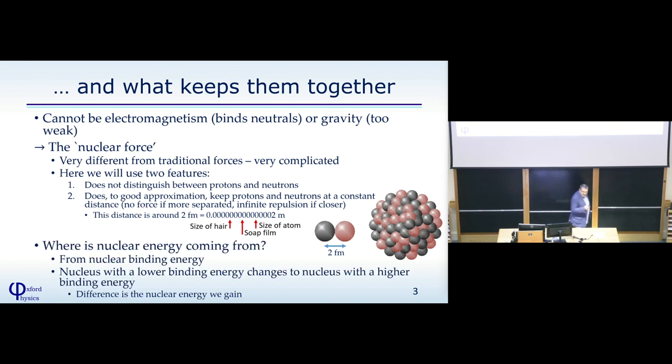The main thing now for any nuclear energy, where is it coming from? The nuclear energy comes from the binding energy of these nucleons. What we will find is we will have a nucleus with a lower binding energy, something happens to it, and it will change into nucleus with a higher binding energy. And the difference between these two binding energies is the gain we get in terms of nuclear energy.